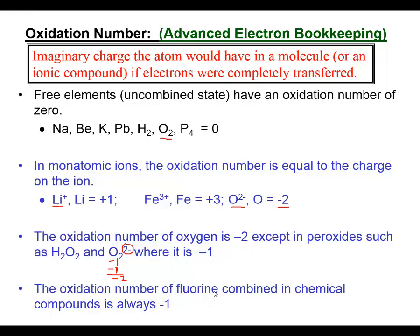If I consider the oxidation number for fluorine, fluorine combined in any chemical compound - meaning combined with any element other than itself - we consider the oxidation number for fluorine to be a negative one. If I have hydrogen present as an elemental form, such as diatomic hydrogen, its oxidation number is zero.